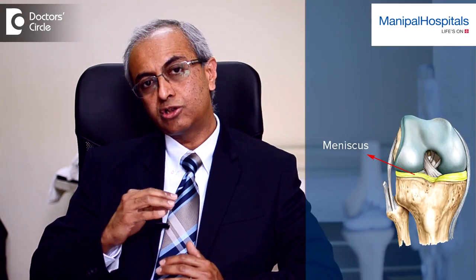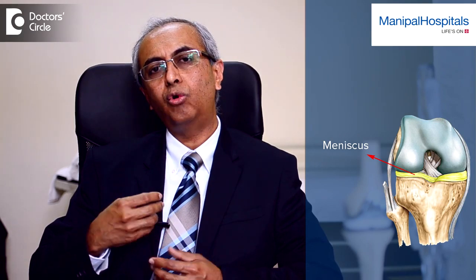Besides the cartilage, Osteoarthritis also affects other tissues within the knee. The meniscus, which acts like a shock absorber, can also get worn out and — like old cloth — can tear easily. People with Osteoarthritis often get a sudden increase in pain because of a small twist during a day-to-day activity, which could be because the meniscus is torn and has already degenerated due to Osteoarthritis.